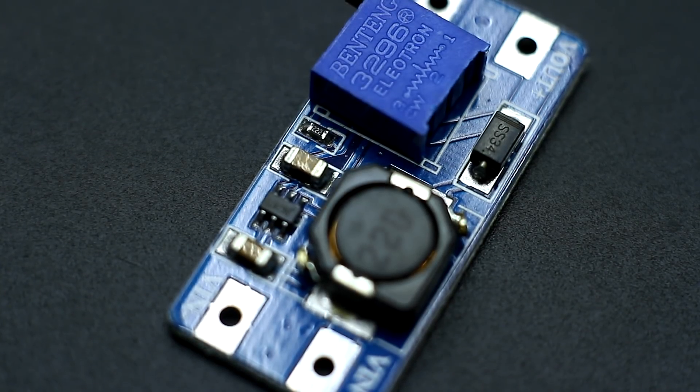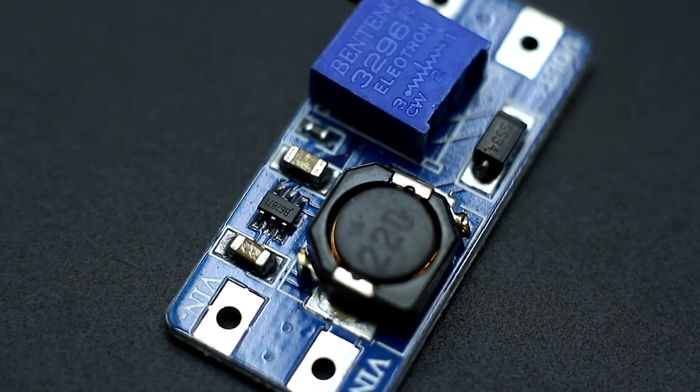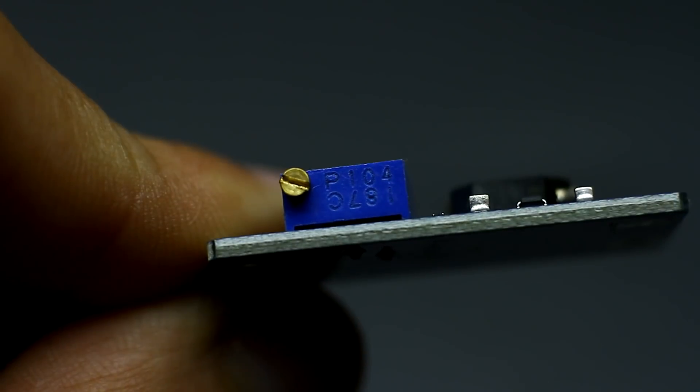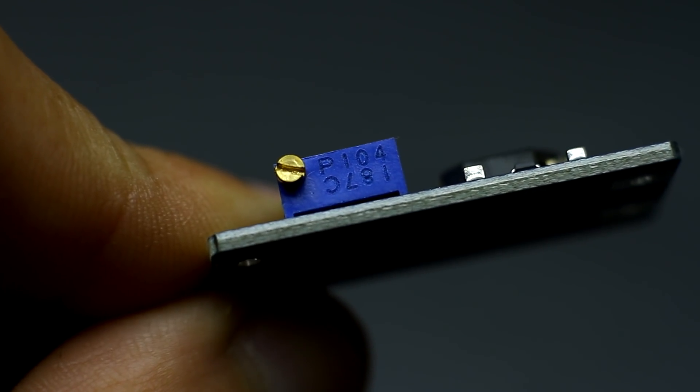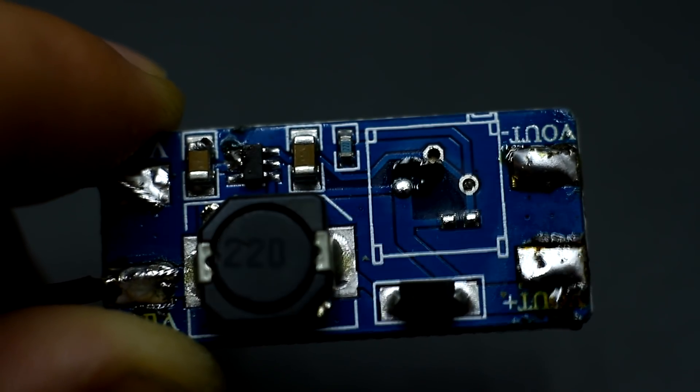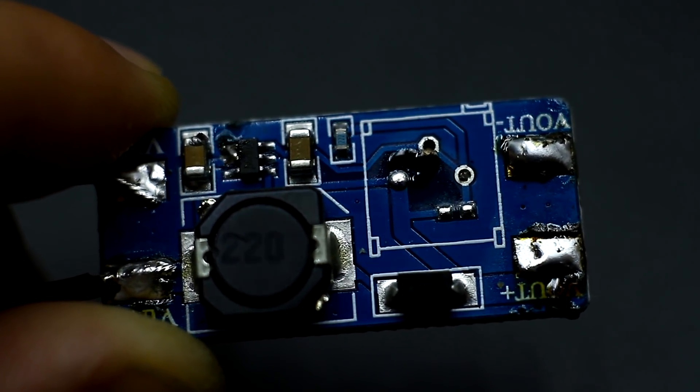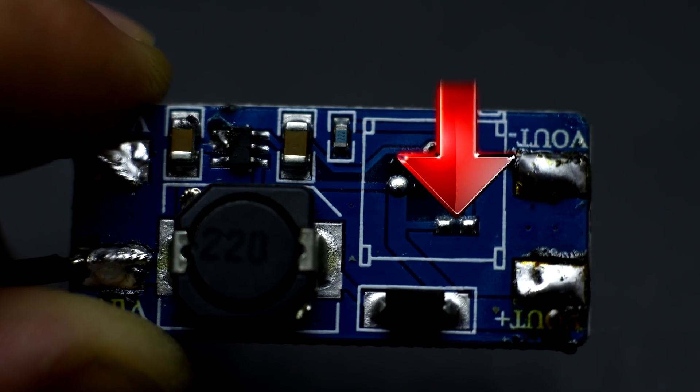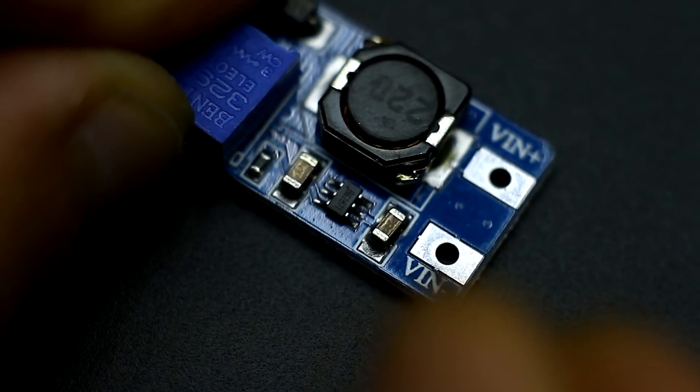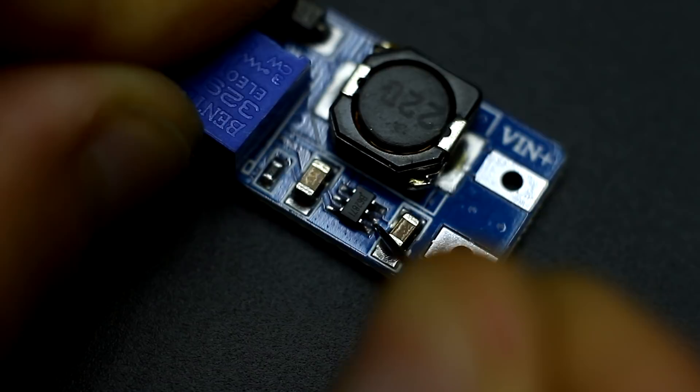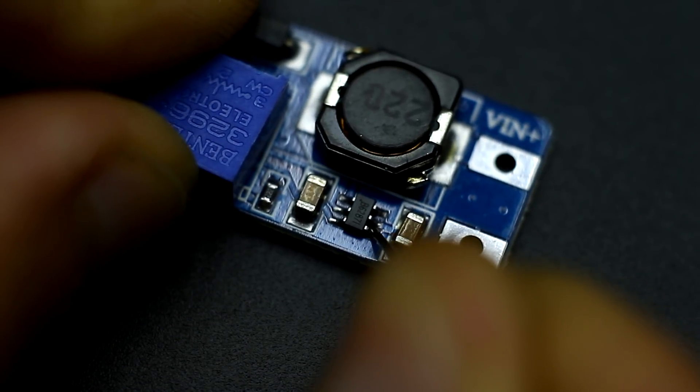First, you need to apply a voltage of about 4V to the converter input and set 9V at the output by rotating the trimmer resistor. But you can just remove the trimmer and solder in its place 70kΩ constant resistor. Further, with something sharp, we separate 4th pin of the chip from the 5th. And then we collect everything according to the circuit.